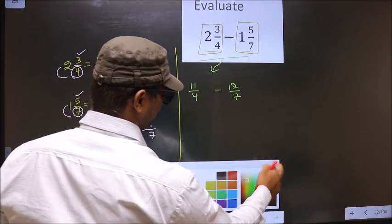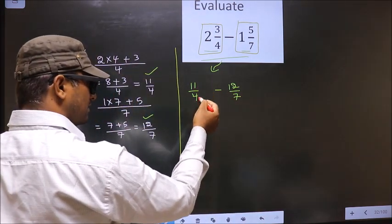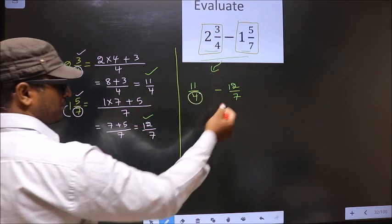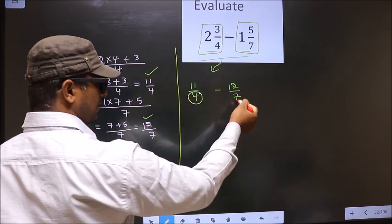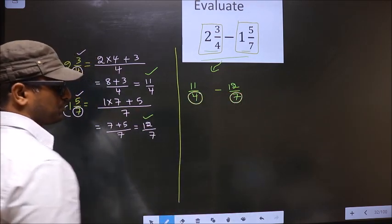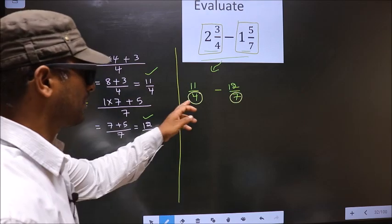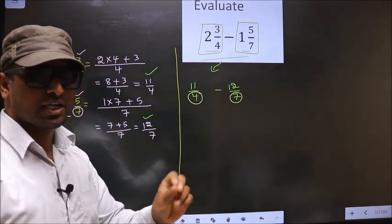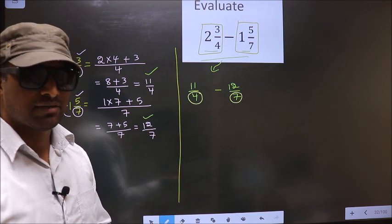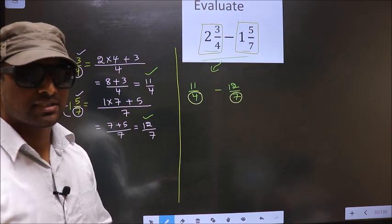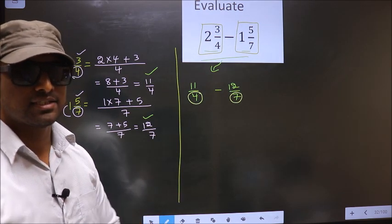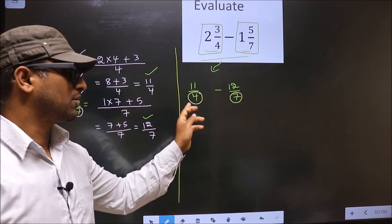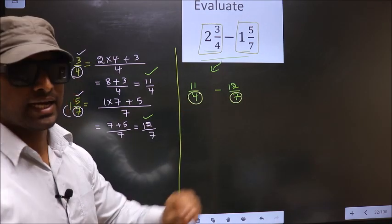Next, in this fraction the denominator is 4, and here the denominator is 7. The denominators are not the same. Whenever the denominators are not the same, we should take the LCM of them. So, the LCM of 4 and 7.